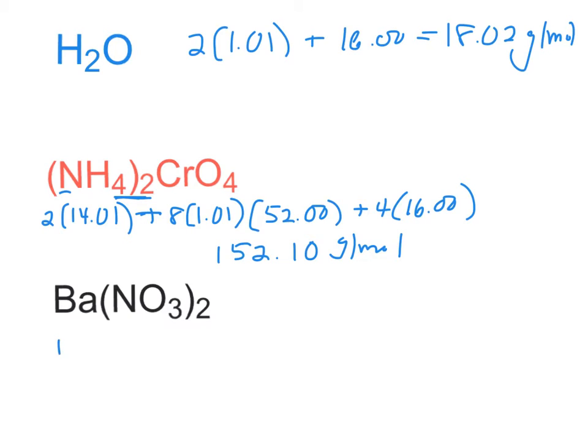Last one: 137.33, that's the mass of barium, plus there's two nitrogens, so 2 times 14.01, plus 6 times oxygen, or 16.00. And if we add all of that up, we get 261.35 grams per mole.